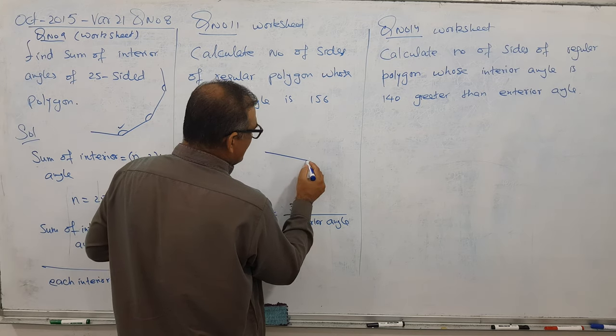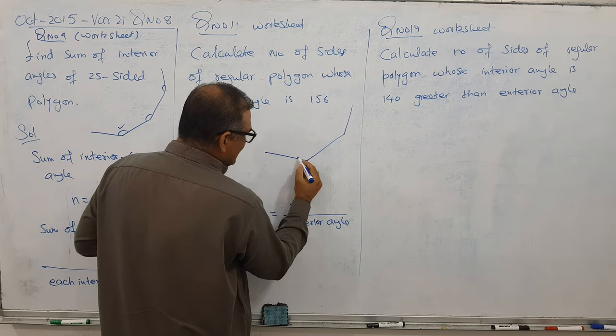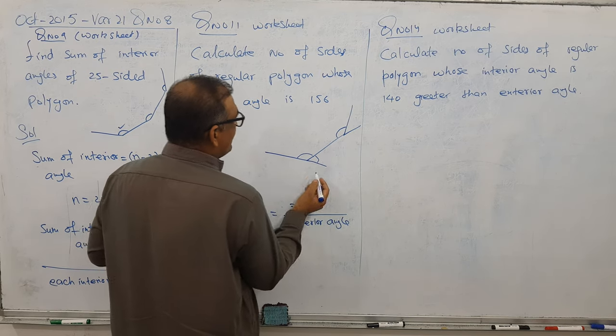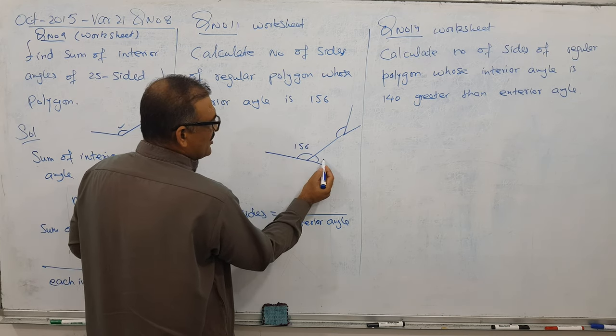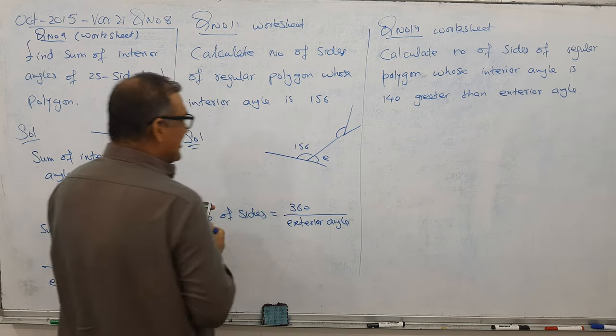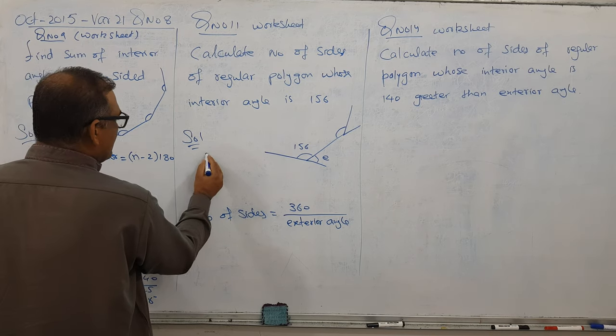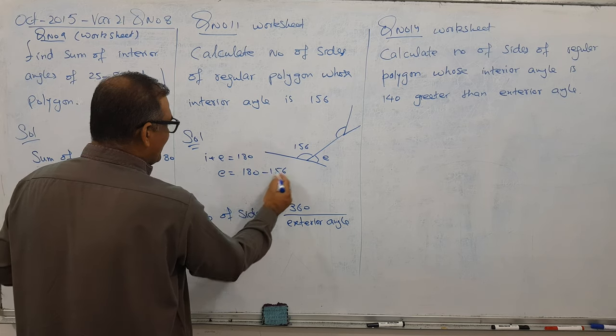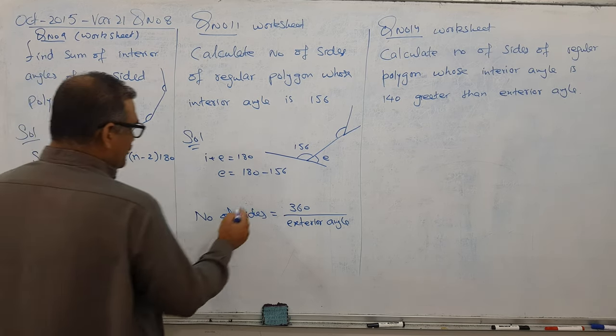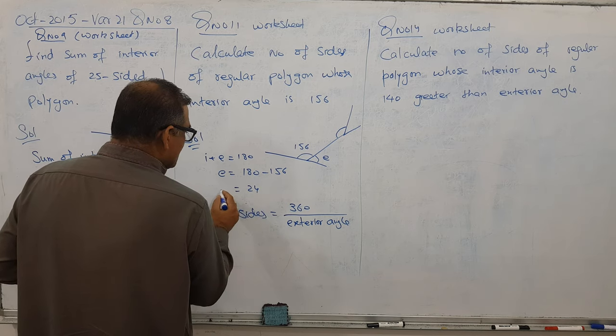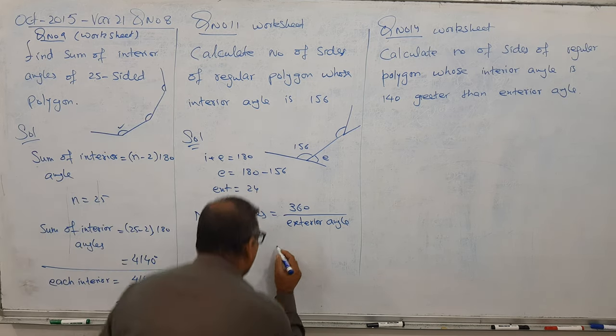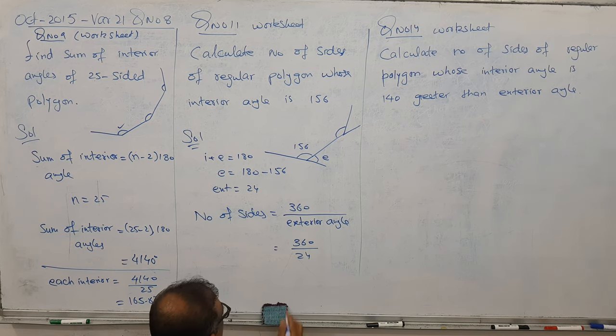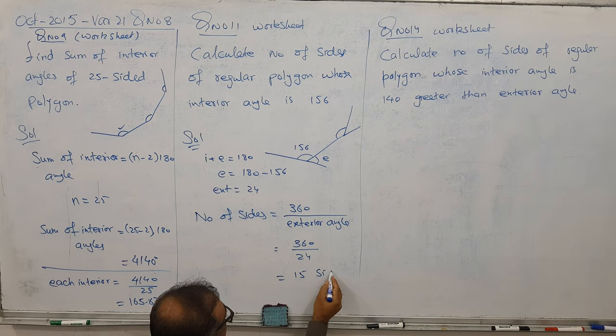This formula is helpful when we have the exterior angle. This is interior, this is exterior. What is interior? 156 degrees. What is exterior? Interior plus exterior equals 180, so exterior is 180 minus 156, which equals 24 degrees.